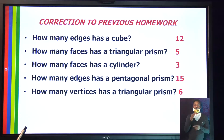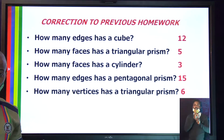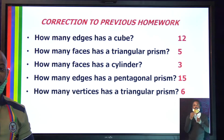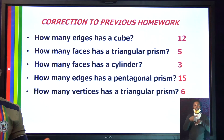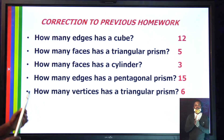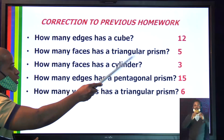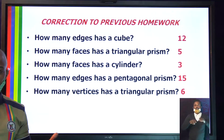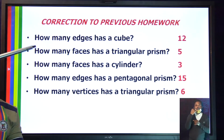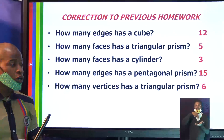The first question of the homework says how many edges has a cube? The answer is that a cube has 12 edges: four at the base, four at the top, and four standing upright. The second question says how many faces has a triangular prism? A triangular prism has five faces: one face at the base, one face at the top, and three faces standing upright.